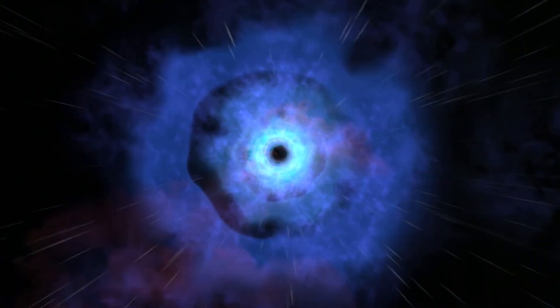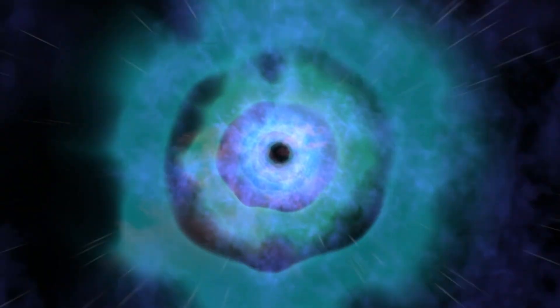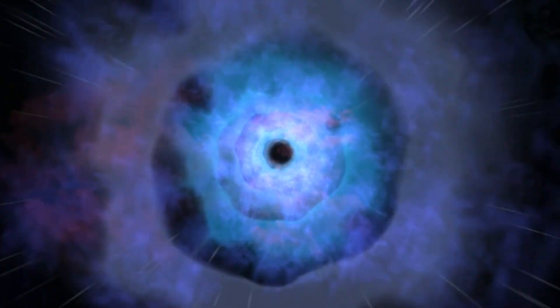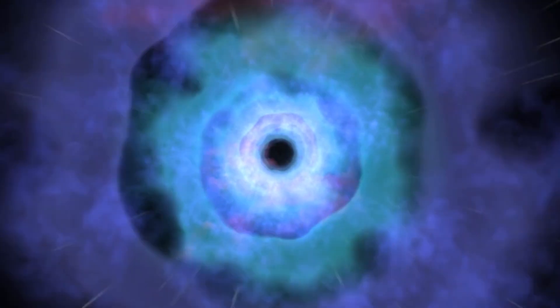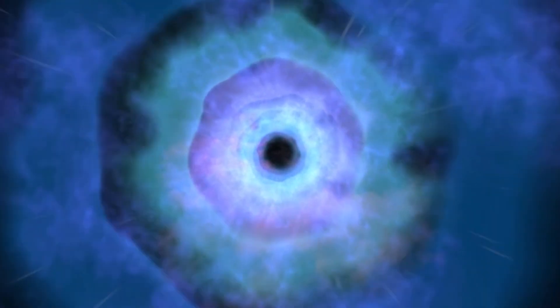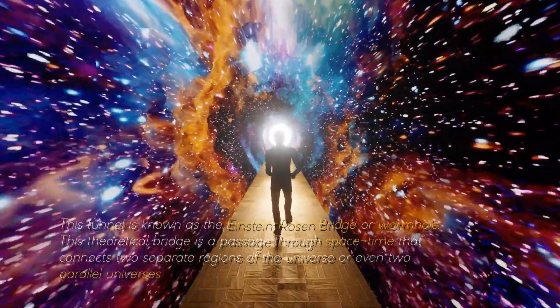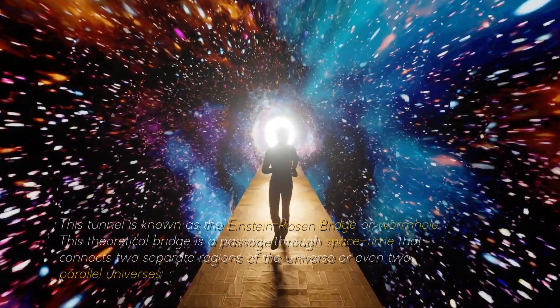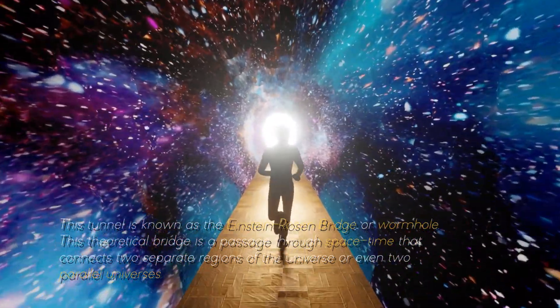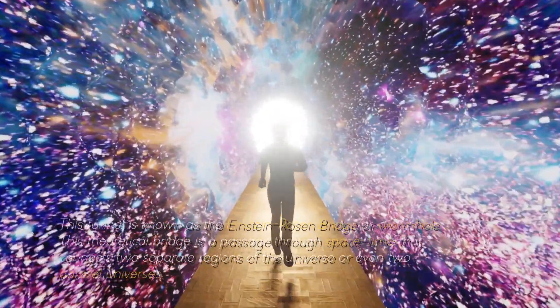You're probably wondering what lies beyond the third layer called the singularity, right? The idea is that, instead of being crushed by falling into a black hole, one would be sucked through a tunnel through the ring of fire and emerge through a white hole somewhere else in a parallel universe. This tunnel is known as the Einstein-Rosen Bridge, or wormhole. This theoretical bridge is a passage through space-time that connects two separate regions of the universe or even two parallel universes.